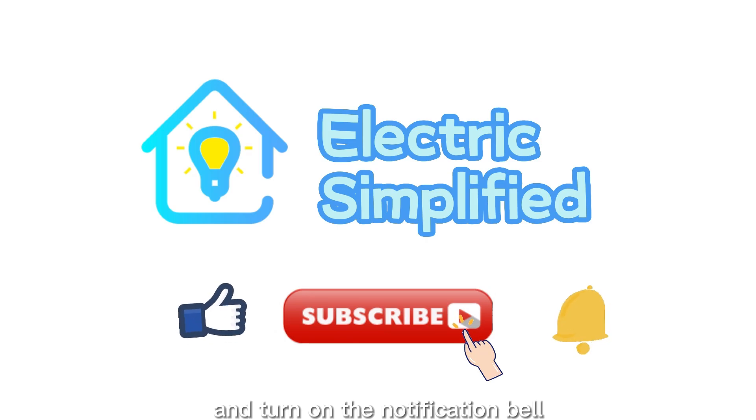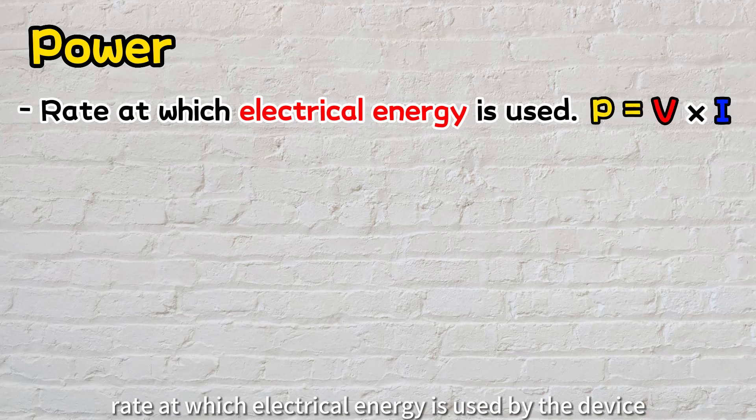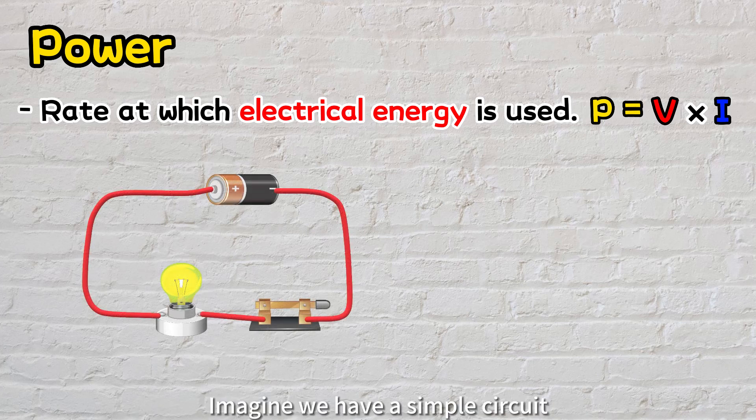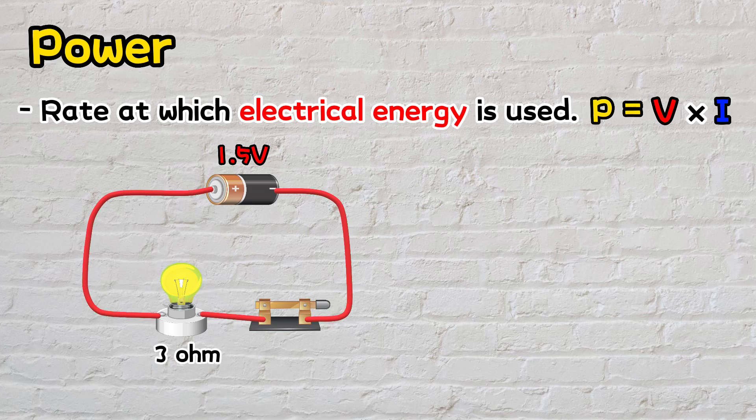In electrical systems, power represents the rate at which electrical energy is used by the device. Imagine we have a simple circuit with a battery that has a voltage of 1.5 volts, a cable, and a light bulb with a resistance of 3 ohms, all connected in series.